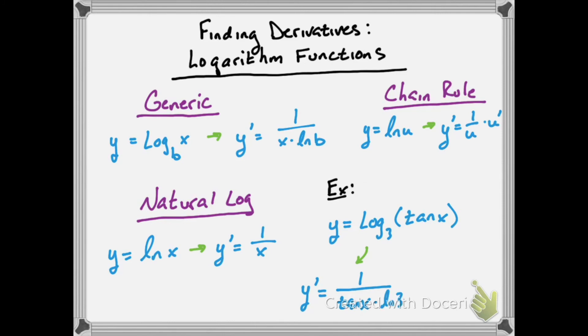Then we have to multiply by the derivative of tangent to finish the chain rule, and that's secant squared of x.